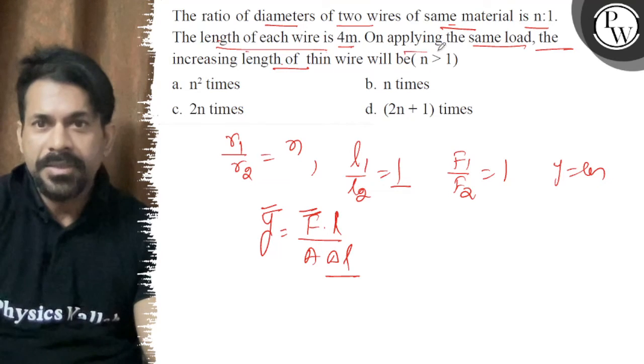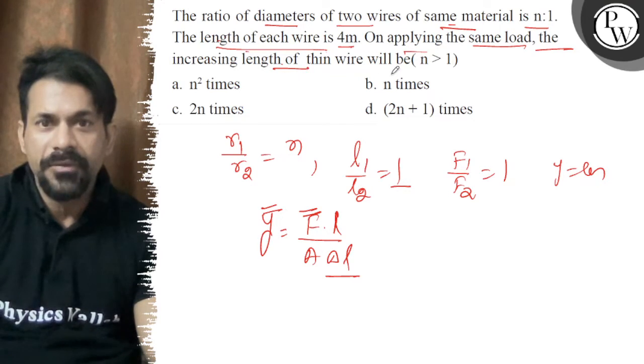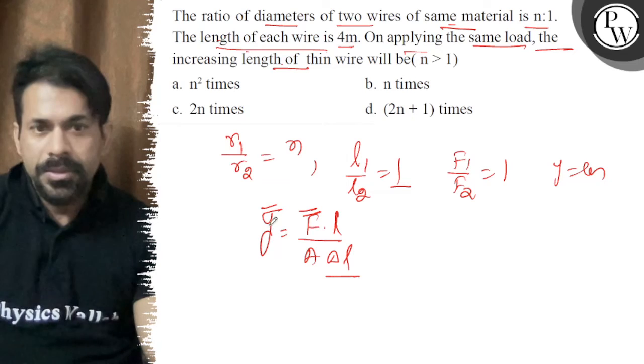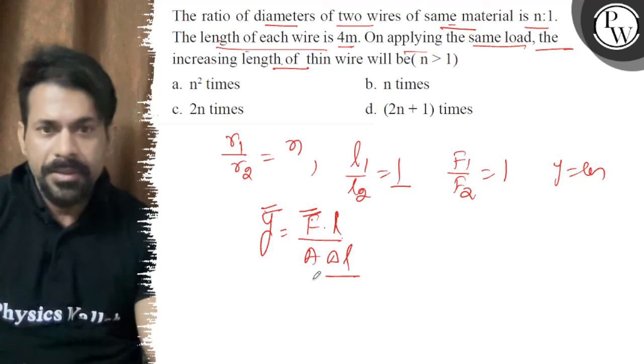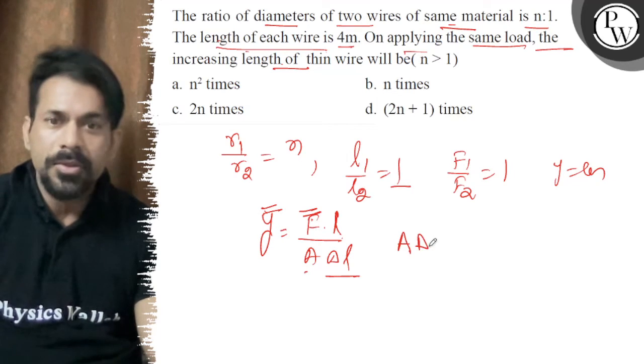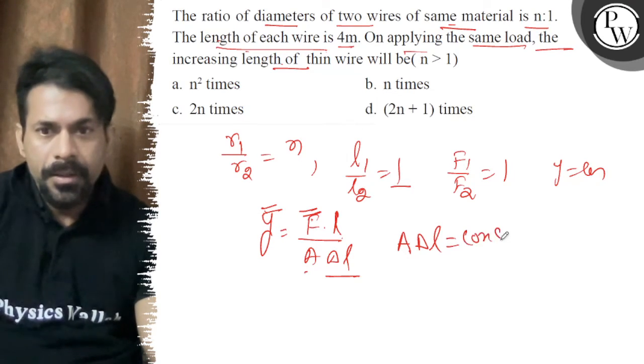Applying the same load, the increasing length of the thin wire - same load, same Y, same L. What about the area? Diameter is not same. L is same, so A·ΔL is constant basically.